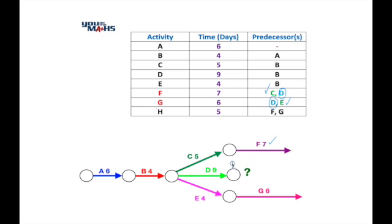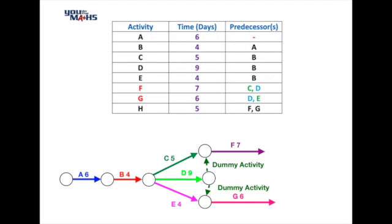So what we do is we put a dummy activity in from the end of D so it splits between the two activities F and G. It must run into the node that's before F and before G because it is a predecessor and neither activity F or G can start until D is completed.